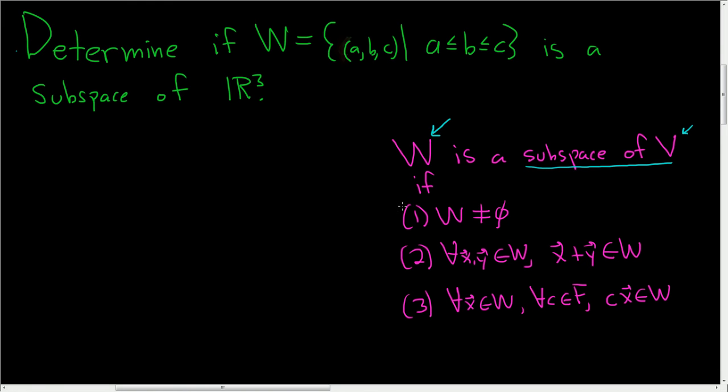So there's three conditions, and if all three conditions are satisfied, then we say that W is a subspace of V. The first condition is that W is not equal to the empty set. In other words, it's non-empty, it contains a vector.